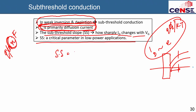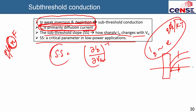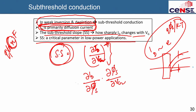The sub-threshold slope is defined as the inverse of how the drain current changes with respect to gate voltage — the inverse of d(log ID)/dVG. A smaller value is better, meaning there is a large change in drain current for a very small change in gate voltage below threshold. This quantity d(ID)/dVG can be written as [d(ID)/d(ψs)] × [d(ψs)/dVG], inverted.